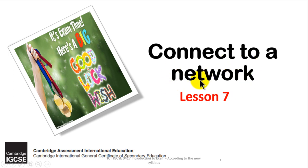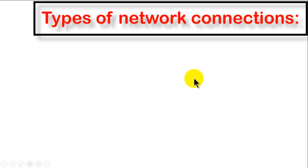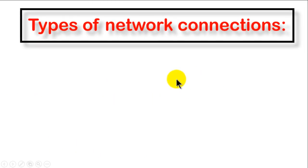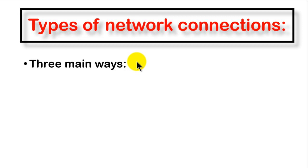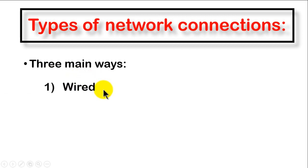Let's start with the first topic: types of network connection. If you need to connect many devices, according to the connection between these devices and the network, we will have some types. There are three main ways to do that. Number one is wired — wired means you are going to use cables.